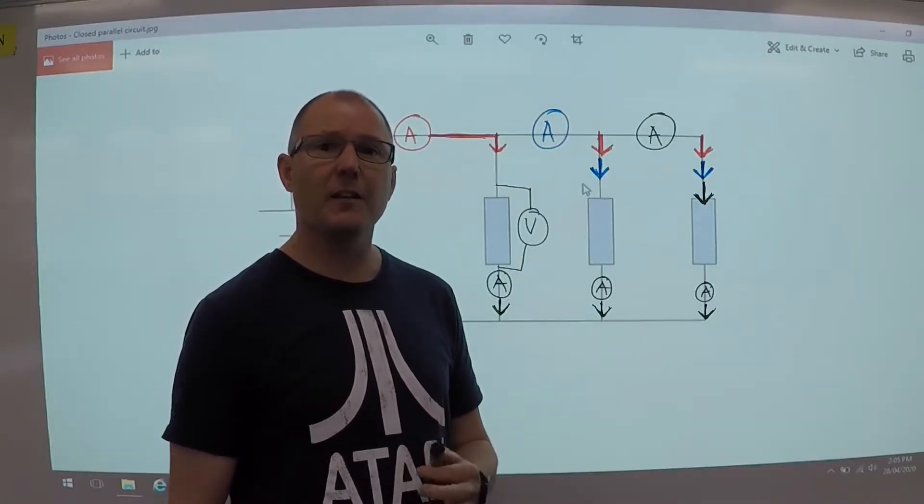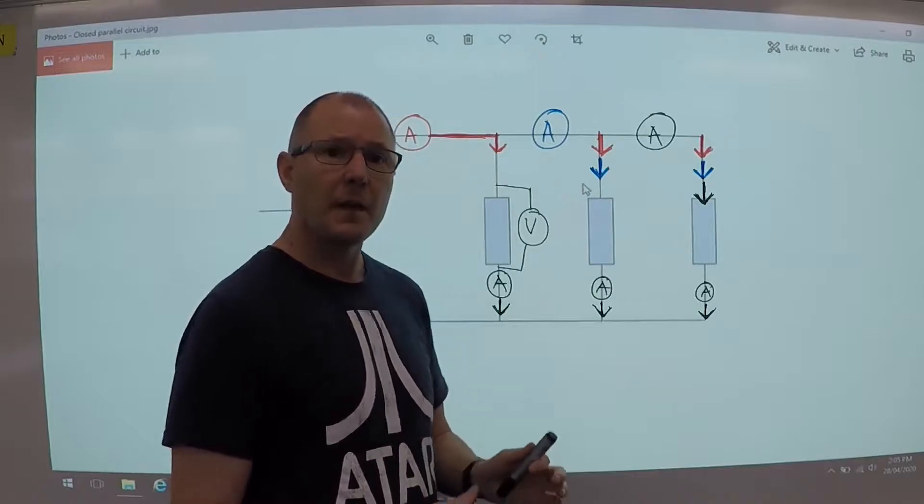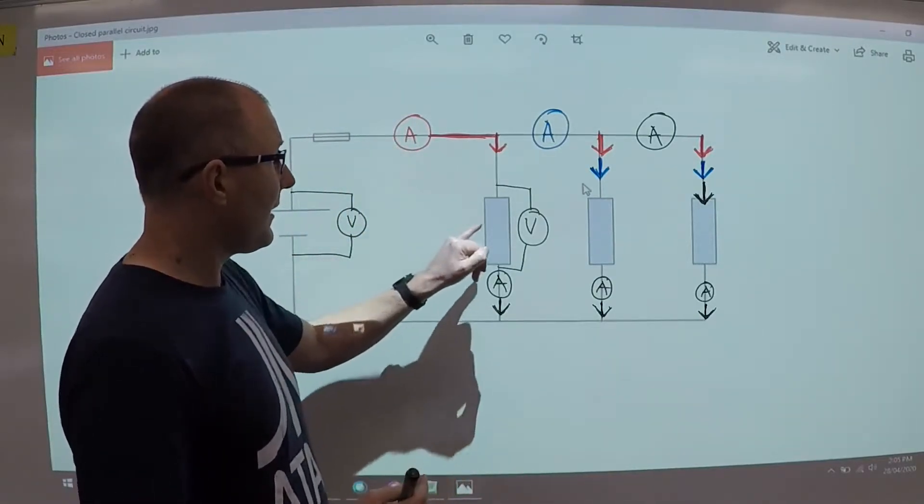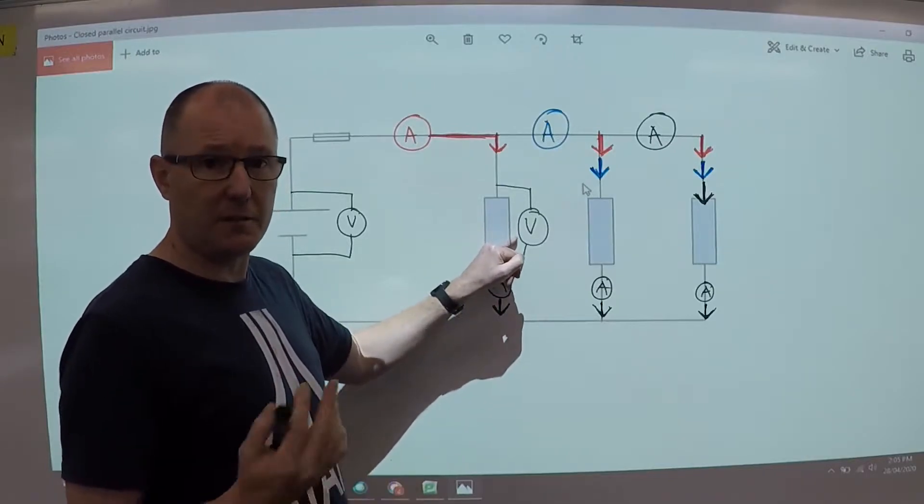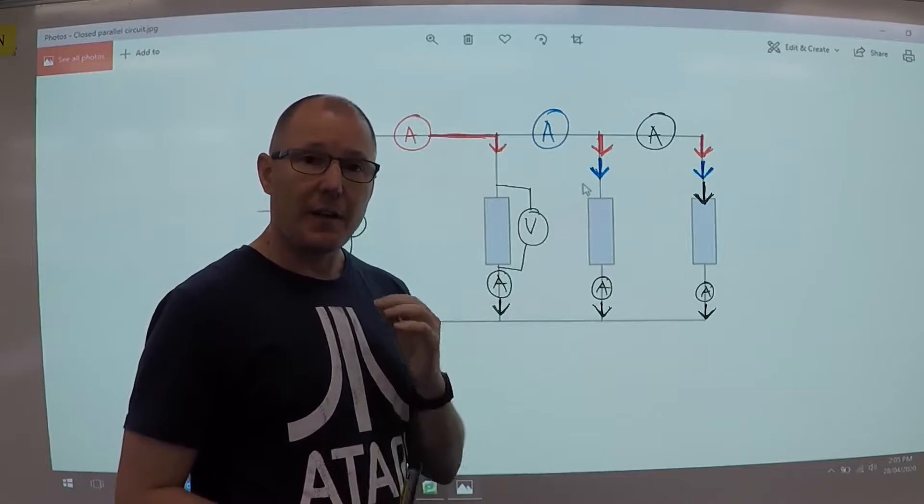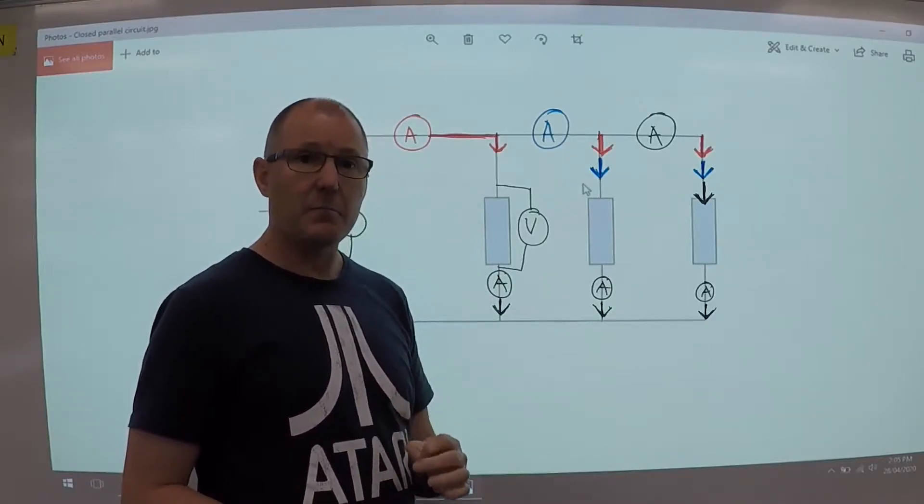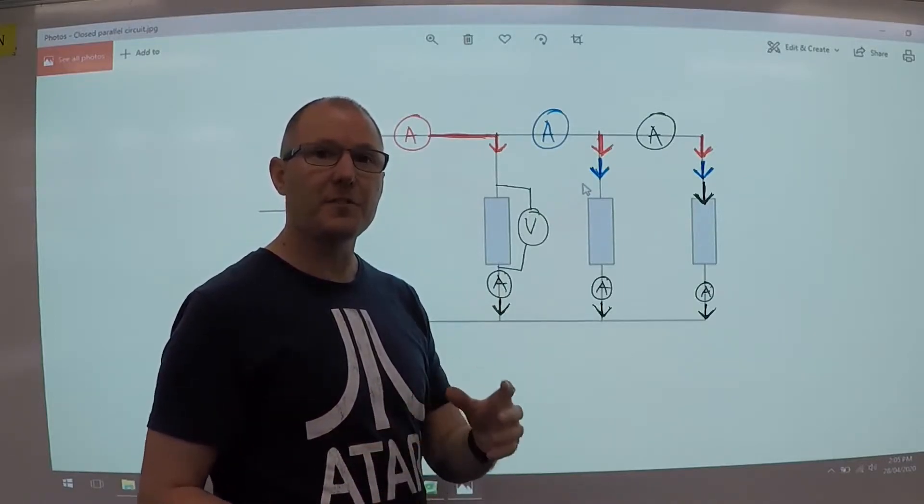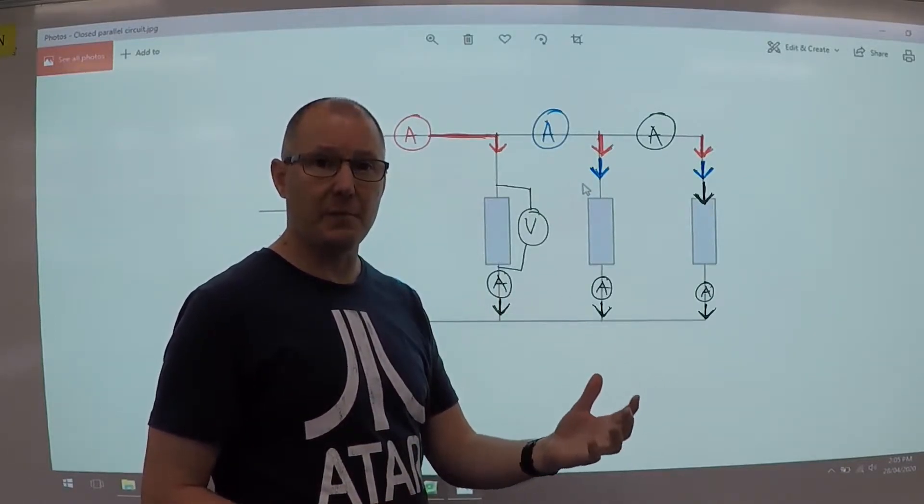Now the meters in parallel are exactly the same. We have voltmeters across the supply in parallel and across the loads in parallel. Now ammeters, they are in series again, but because it's a parallel circuit, measuring the current depends on where you place the ammeter.